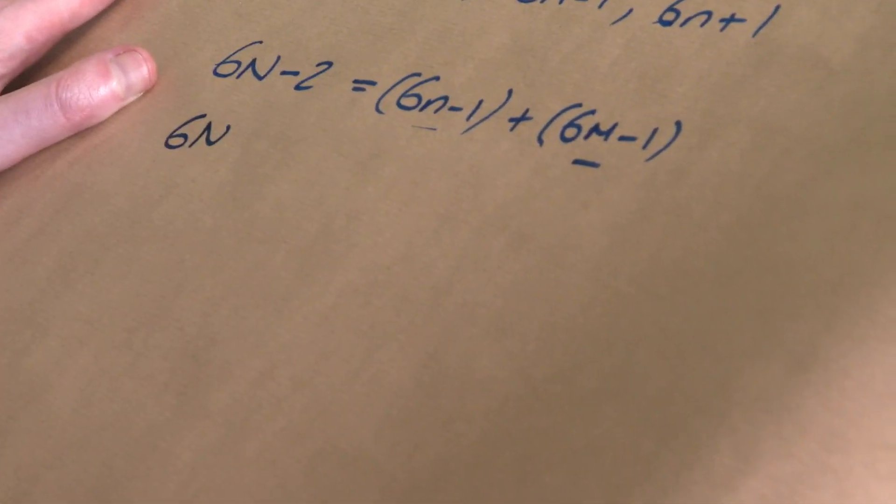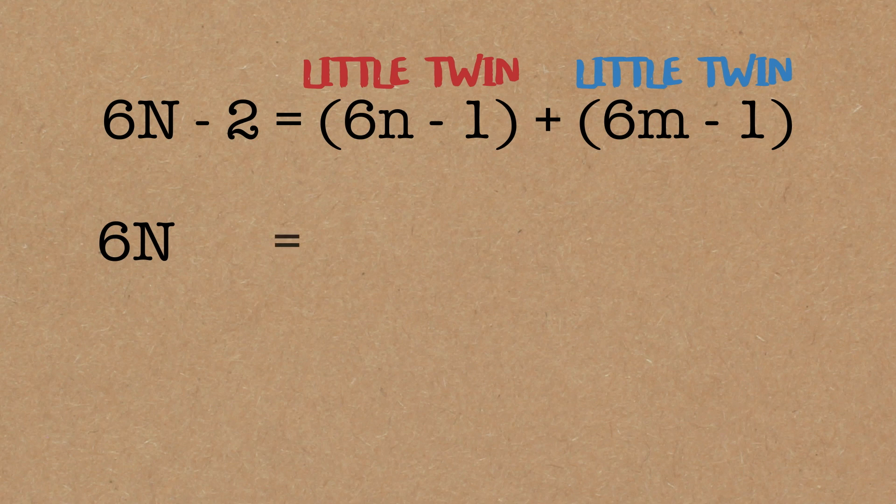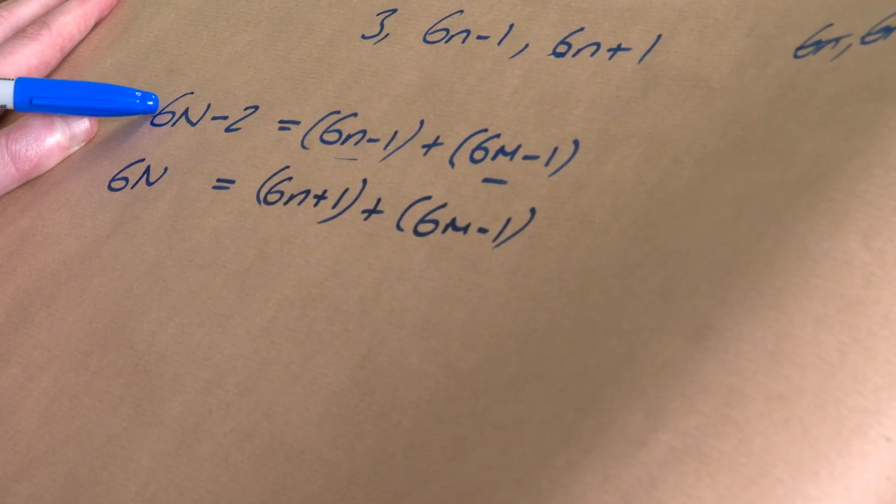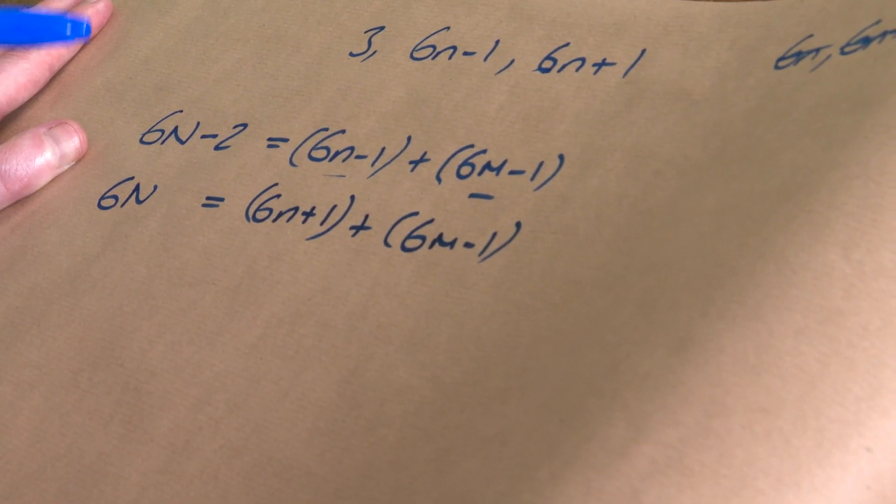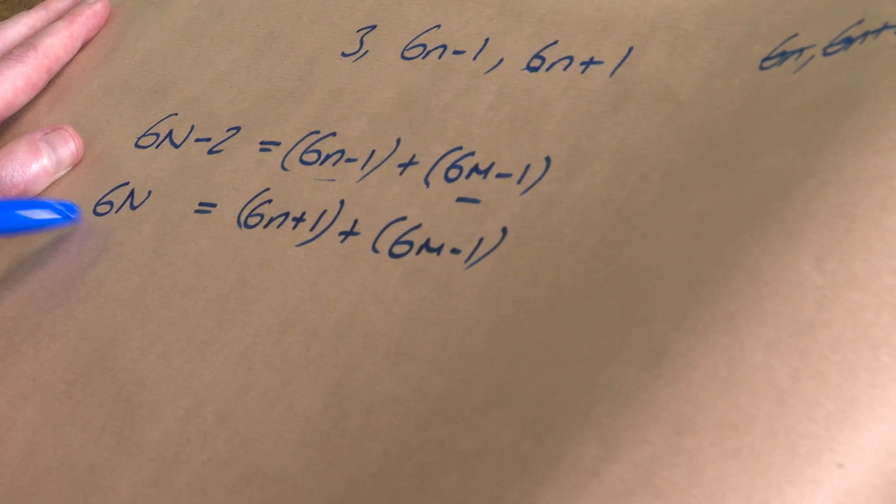So imagine those are twin primes. Then the next even number, I just add 2. So let's add 2 to that. So it's going to be 6n, because that's just me adding 2. So I'm going to add 2 to both sides. On the right-hand side, that's going to become 6n plus 1, which means the small twin prime has been replaced with the bigger twin prime. Plus 6m minus 1, which was the one I had already. So that means if I can write this number with twin primes, I automatically can write that number with twin primes. By using the bigger brother.